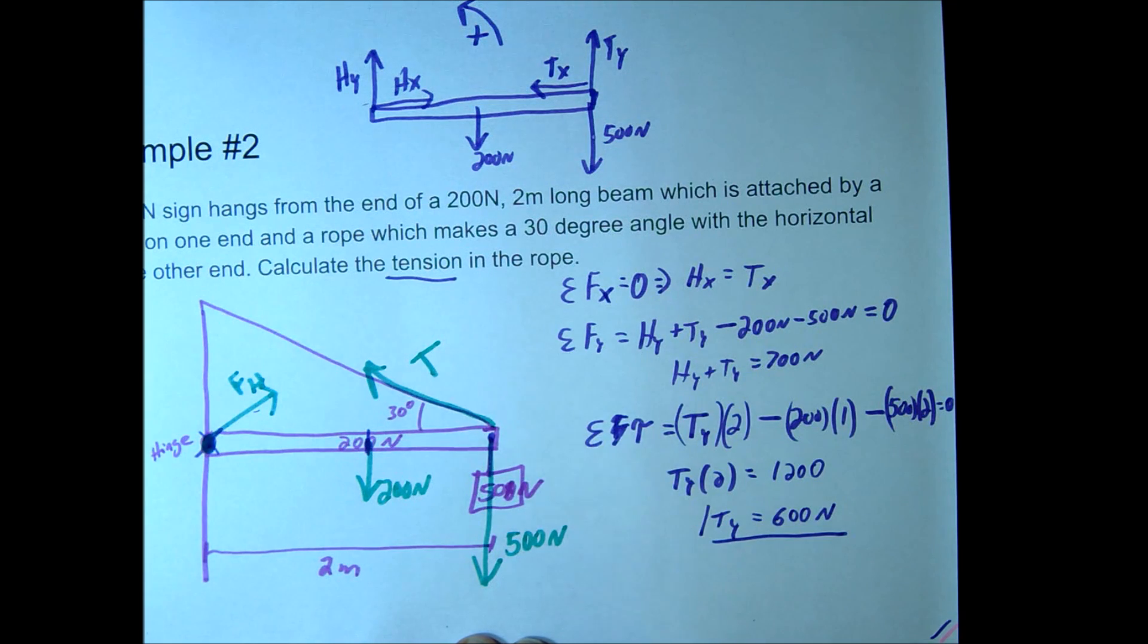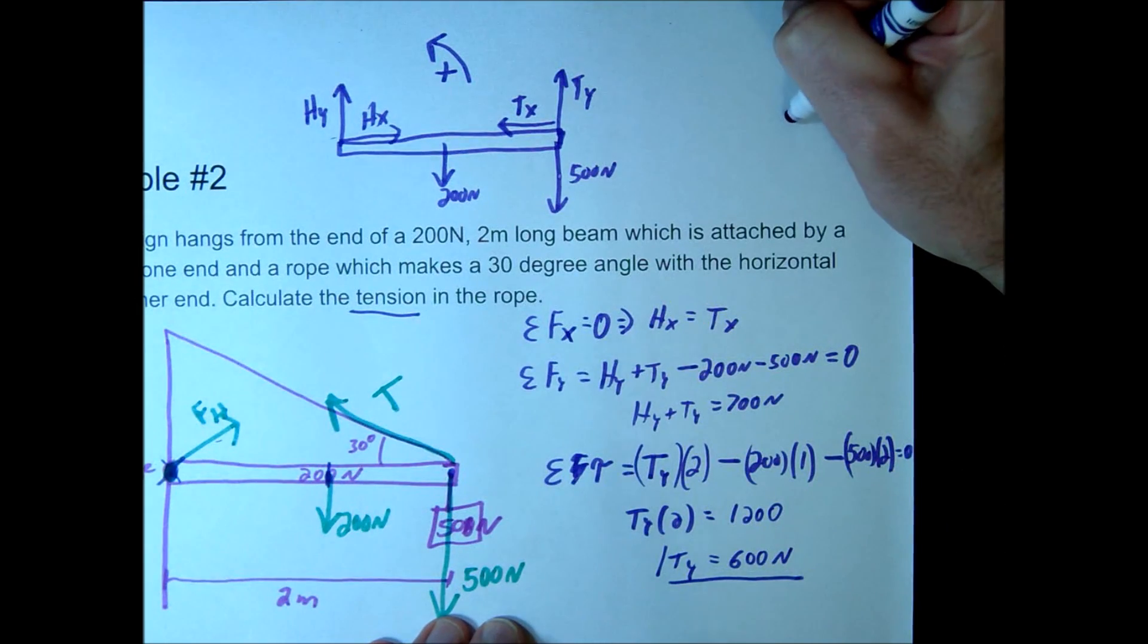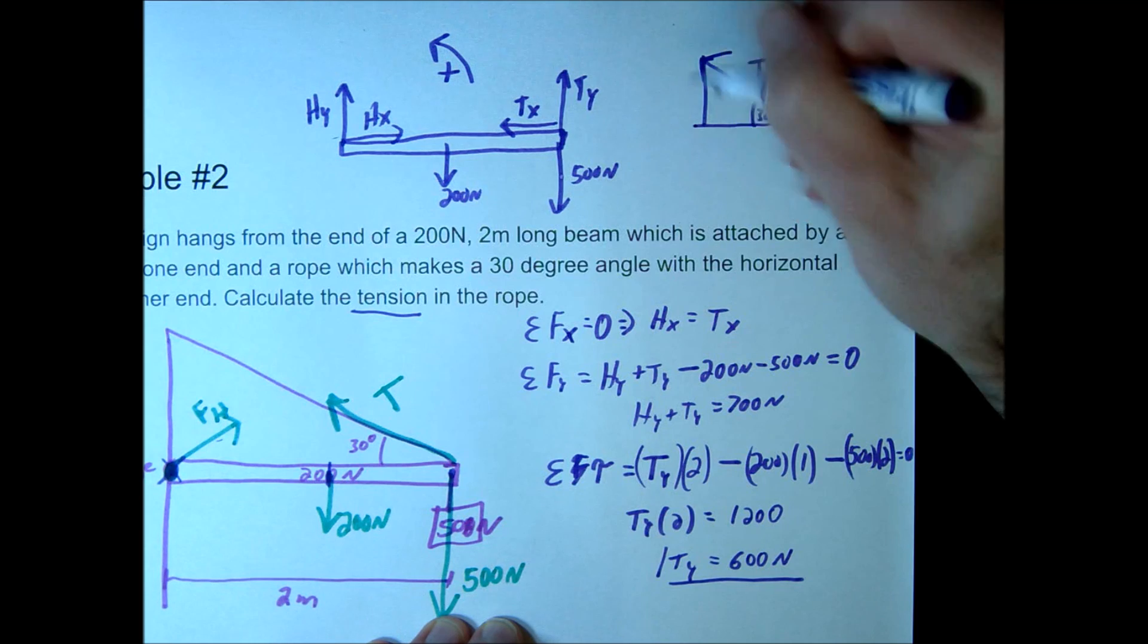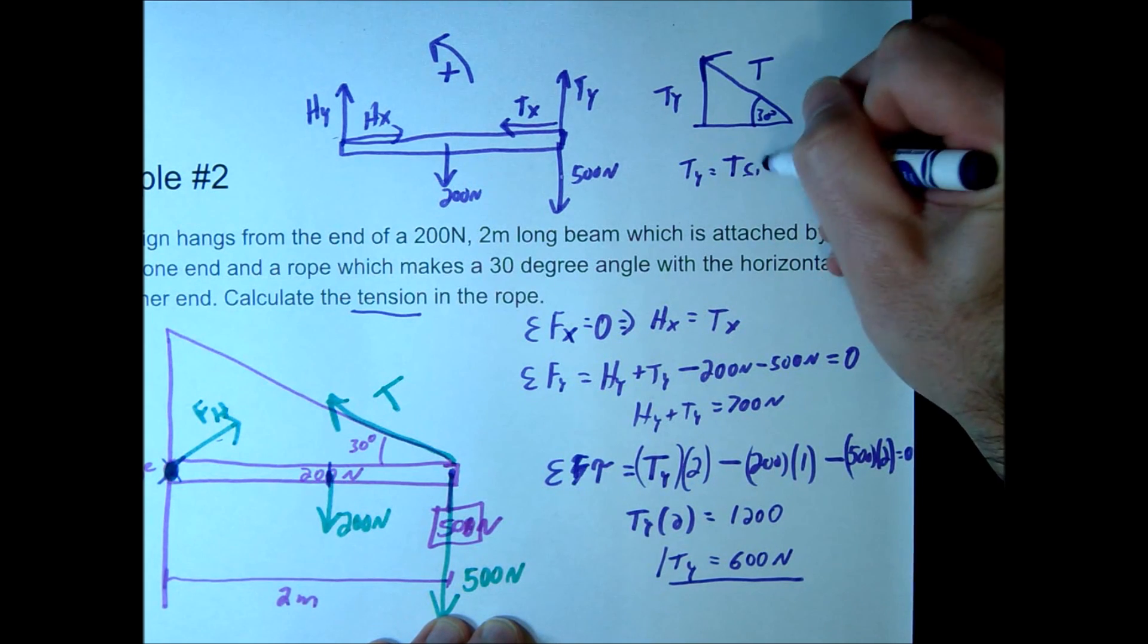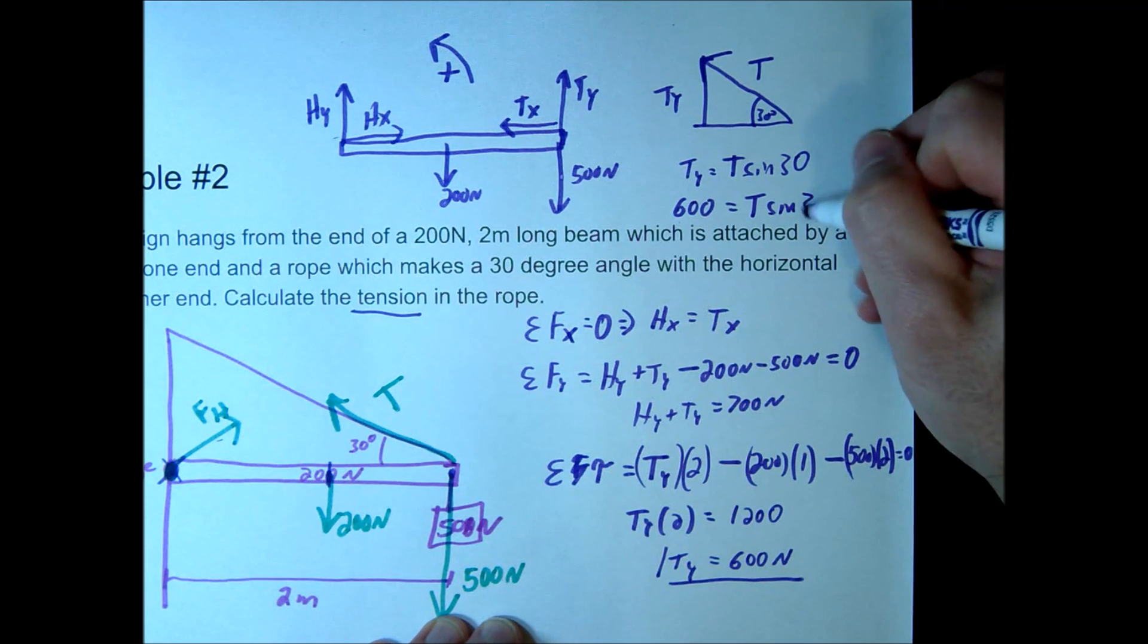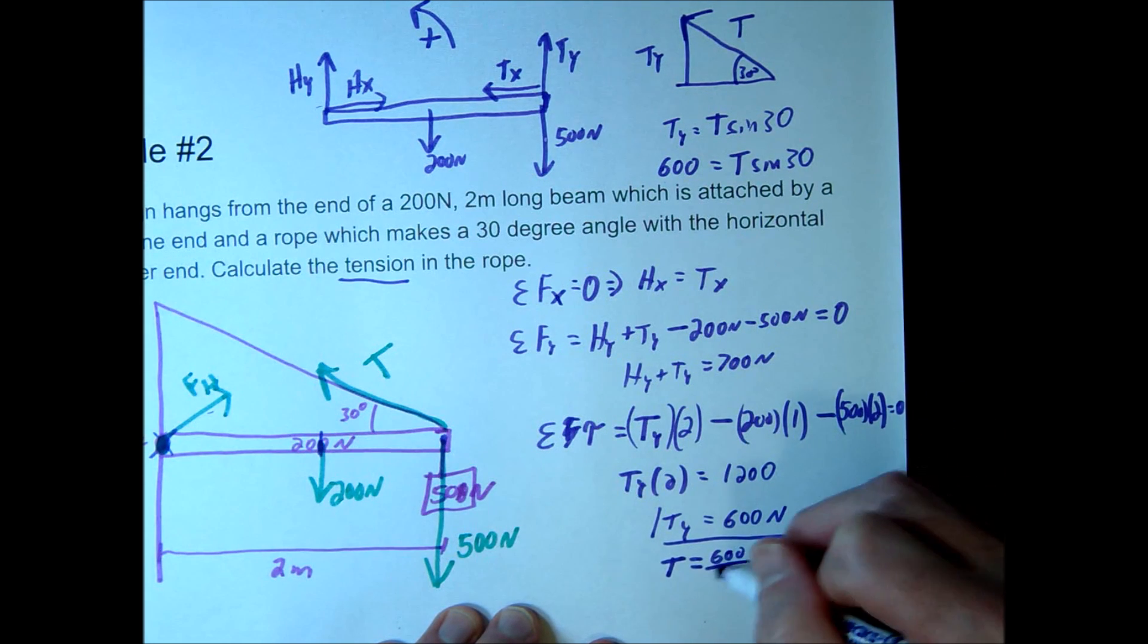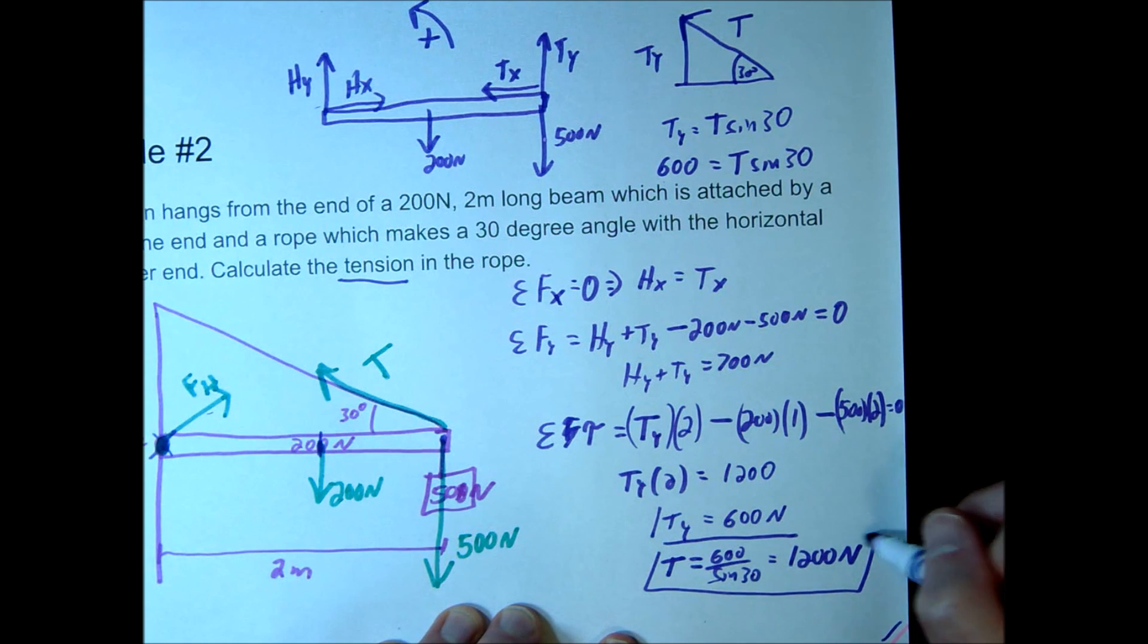So if we go back to our picture over here again, remember this is our tension going up this way. Let's see where to have space up here, little triangle. So here's our tension going up this way, this was 30 degrees, this would be ty and this would be tx. Okay, so hopefully you can see ty is equal to T sin 30. So in this problem we figured out 600 is equal to T sin 30, and remember sin 30 is just a half, so therefore T should be equal to 600 divided by sin 30 equals 1,200.